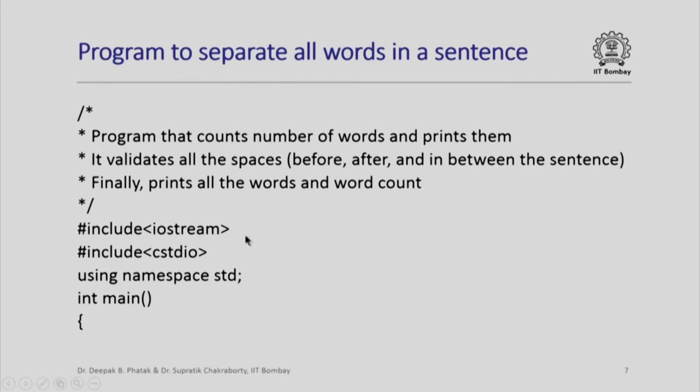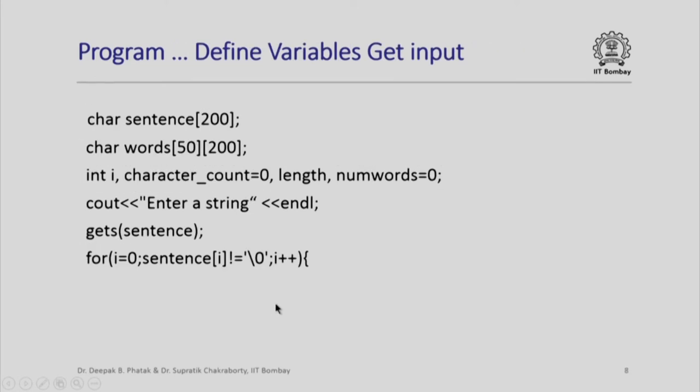These are merely standard initial declarations of include statements, namespace and integer main function. We define variables and get the input. The variables are sentence, which is one single sentence char array, the words matrix, which is 50 rows by 200 columns, int i is the index which will use for scanning the sentence, character count is the count within each word, length numbers, numbers is the number of words and that is set to 0 to begin with.